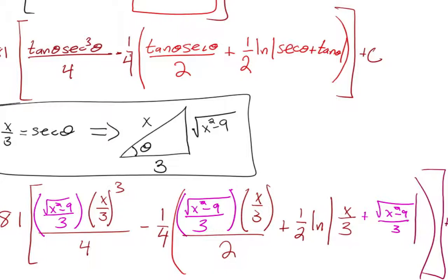This is admittedly one of the not-so-good ones — it doesn't always end up this complicated. In the previous simpler example we ended up with just theta, requiring the inverse trig function. This time we ended up with trig functions of theta, so we used the right triangle method instead.